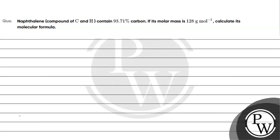Let's read this question. The question says naphthalene is 93.71% carbon, and the mass of it is 128 grams per mole. We need to calculate the molecular formula.